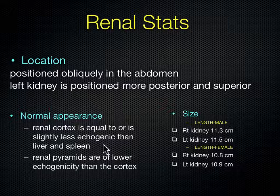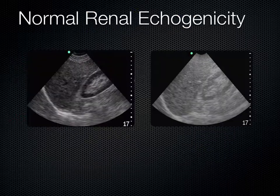Why is the left kidney bigger than the right kidney? It's because the aorta travels from the heart down the left side of the spine. The left kidney, being closer to the aorta, gets more of a direct blood supply, so it gets a little bigger over time. That's why the left kidney is bigger than the right — it's closer to the aorta.